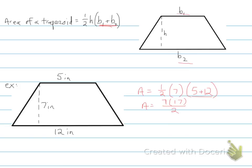And if we were to multiply that out, we would get 119 divided by 2. So the area of this particular trapezoid is going to be 59.5 inches squared. And I assure you we will do many more examples of this in class. So please have your notes, have your formula charts ready to go, and I will see you then.